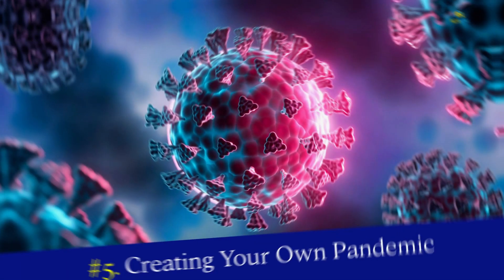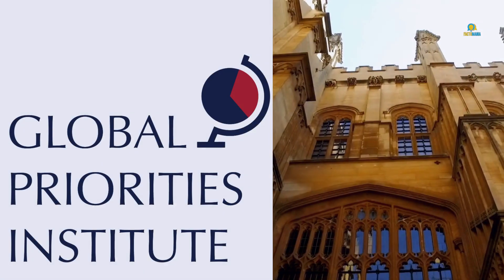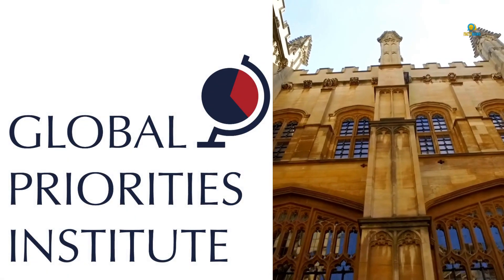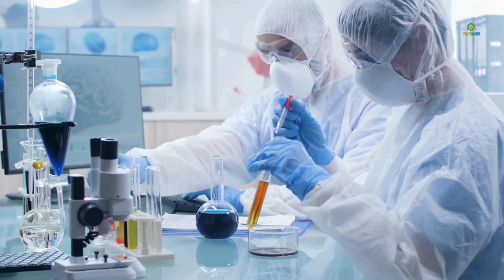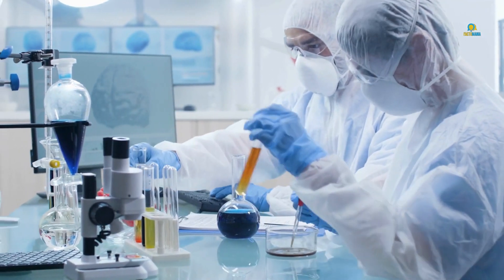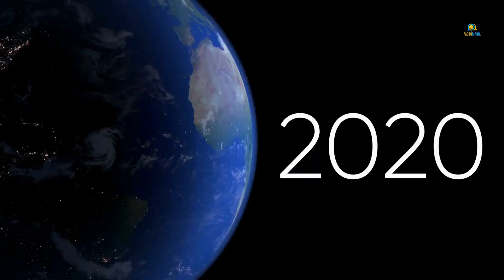Number five: creating your own pandemic. Back in 2016, Oxford's Global Priorities Project compiled a list of catastrophes that could kill off 10% or more of the human population. High on this list was deliberately engineered pandemic, and the authors warned that it would happen in the next five years.